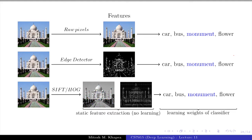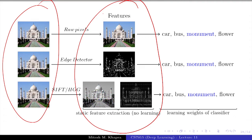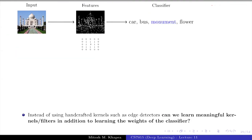So the learning pipeline was: given some input, do a static, deterministic feature extraction — no learning there — pass it through an edge detector, blur detector, SIFT, or HOG, get some representation, and the only learning happens on top of that transformed input. You learn only the weights of the classifier — equivalent to learning only the softmax layer in a feedforward network. Now the question is: instead of using these handcrafted kernels, can we learn meaningful kernels in addition to learning the weights of the classifier?